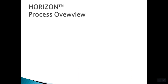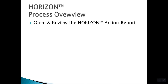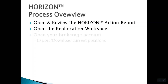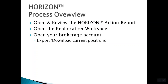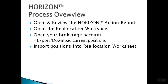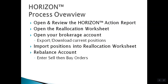We're going to go through the five main steps: opening and reviewing the Horizon Action Report, opening the reallocation worksheet, and then accessing your Vanguard brokerage account where you will export your current positions. You'll then import those positions into the reallocation worksheet, which will automatically generate the transactions needed to rebalance your Vanguard account.